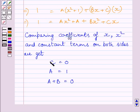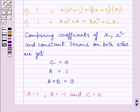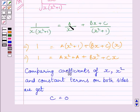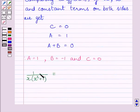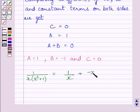We also get A is equal to 1 and A plus B is equal to 0. Solving these three equations, we get A is equal to 1, B is equal to minus 1, and C is equal to 0. Substituting values of A, B, and C, we get 1 upon x multiplied by x squared plus 1 is equal to 1 upon x plus minus x upon x squared plus 1.